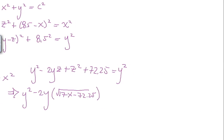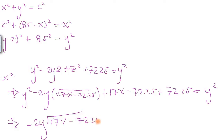Y squared minus 2YZ, which is the square root of 17X minus 72.25 plus Z squared, which is this term squared, so it's going to be 17X minus 72.25 plus 72.25 equals Y squared. Now, this Y squared and this Y squared cancel. This minus 72.25 plus this 72.25 cancel. So we only have what left? We have this term, which is minus 2Y and the square root 17X minus 72.25 plus 17X equal to 0.